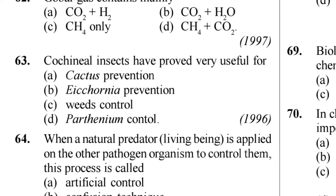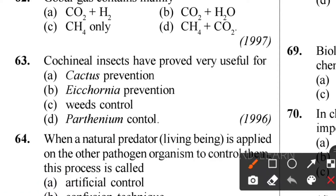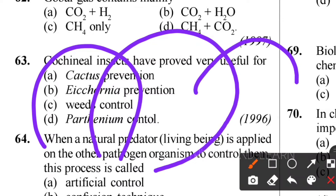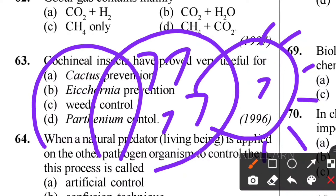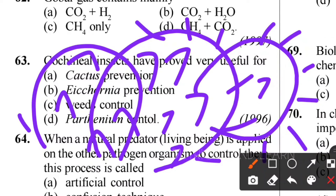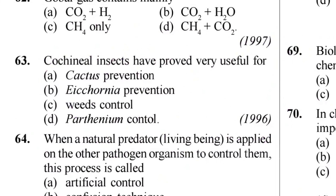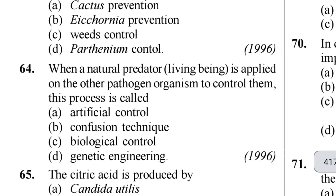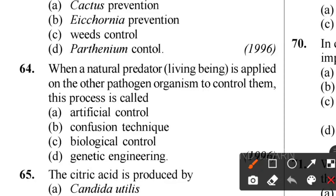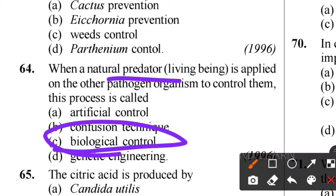Sixty-third question: cochineal insects have proved very useful for what? Cochineal insects are natural herbivores. They are used for the prevention of extensive growth of Opuntia (cactus) in Australia. Opuntia is like a cactus with spines. Cochineal insects feed on Opuntia as herbivores, controlling cactus growth. Sixty-fourth question: when a natural predator is applied to control another organism, this type of process is called biological control.